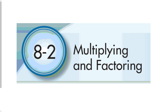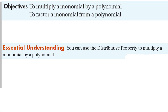8-2: Multiplying and Factoring. Our objective for this section is to multiply a monomial by a polynomial, and then to factor a monomial from a polynomial. Our essential understanding is that we can use the distributive property to multiply a monomial by a polynomial.